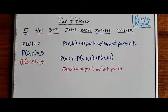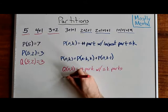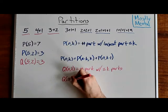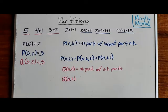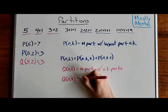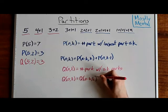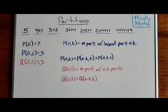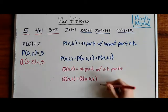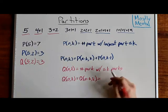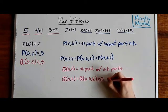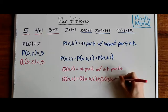So, how do we find q of n, k? Again, there are two cases. Either there are k parts, or there aren't. If there are k parts, then all of the parts are at least one. So, if we take that out, we're left with q of n minus k, k. And, if there aren't k parts, then we can just simplify to q of n, k minus one.